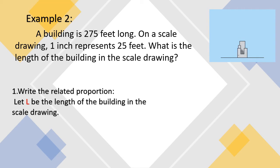First, write the related proportion. Let L be the length of the building in the scale drawing. You may use any variable in finding the missing term. At this time, we use L.